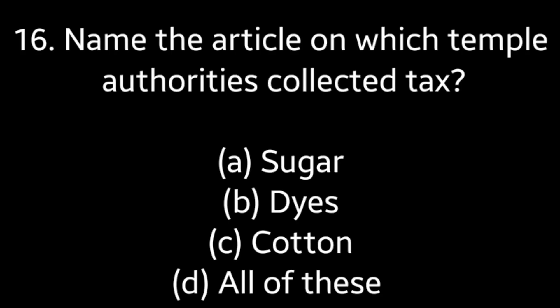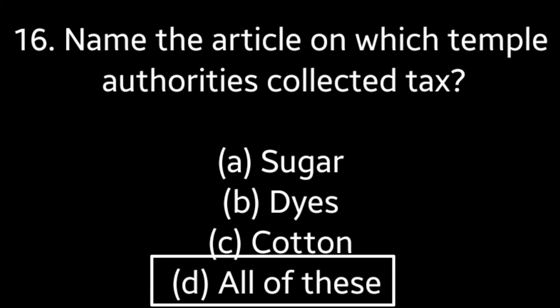Question No. 16. Name the articles on which temple authorities collected taxes — Dice, Sugar, Cotton, all of these. Answer is Option D: All of these.